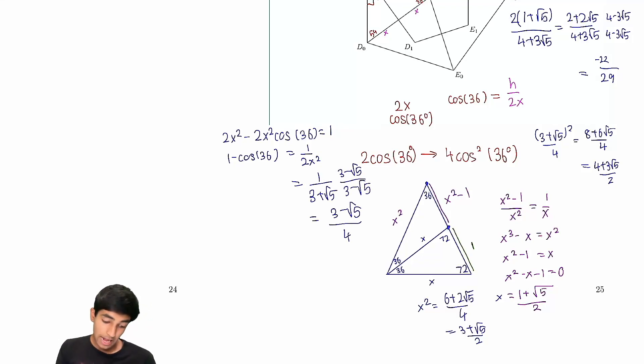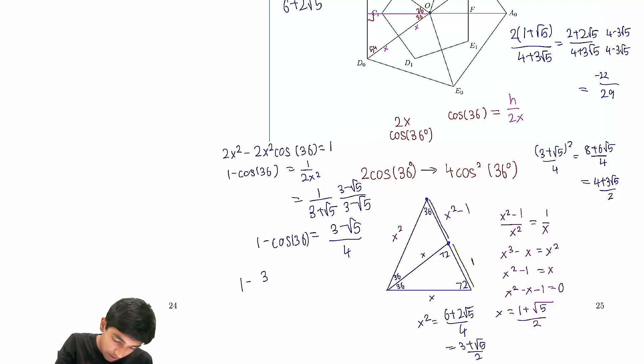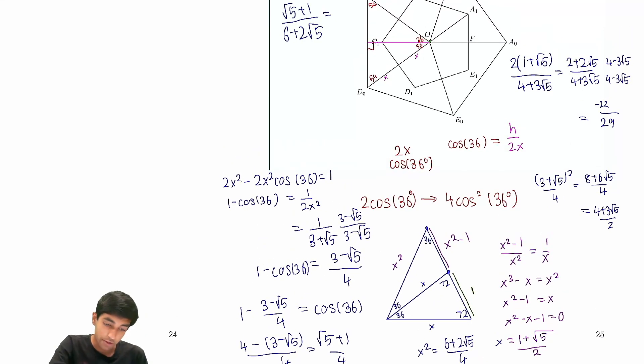That is the value of 1 minus cosine 36. The value of cosine 36 itself is just going to be 1 minus this quantity. 1 minus 3 minus √5 by 4 is cosine 36. So we have 4 minus 3 minus √5 over 4, which is just √5 plus 1 by 4. That's the value of cosine 36.